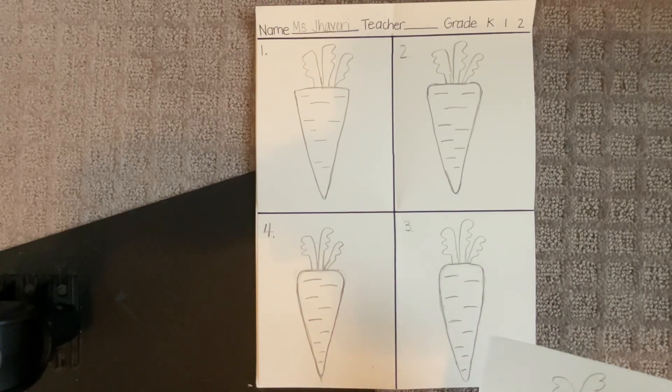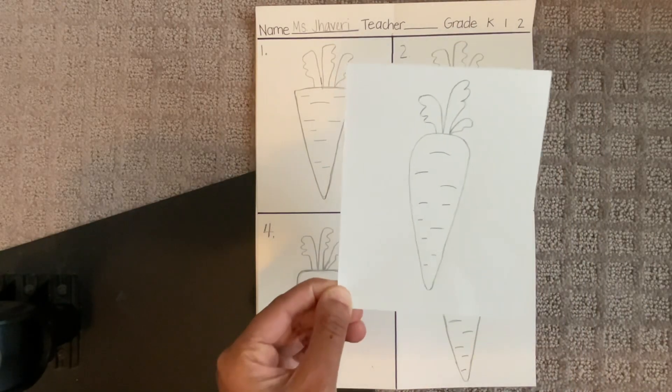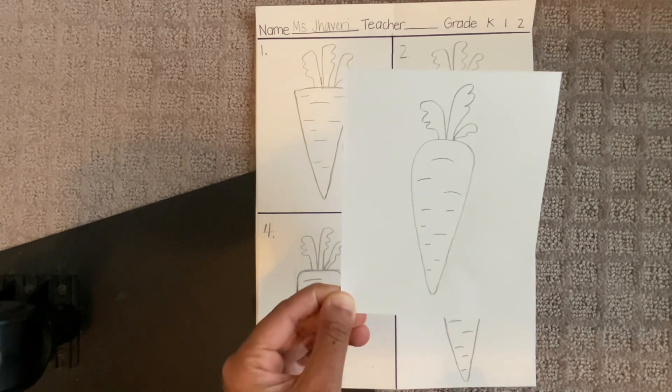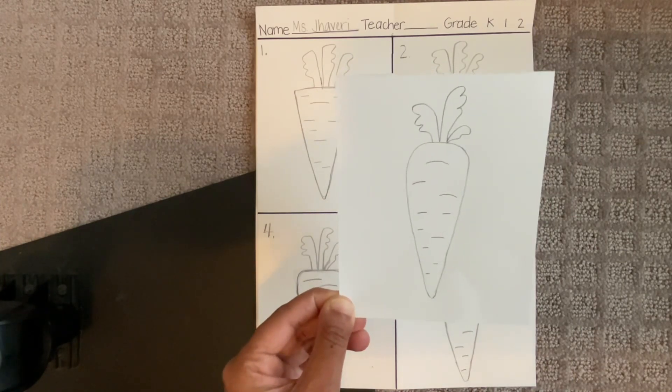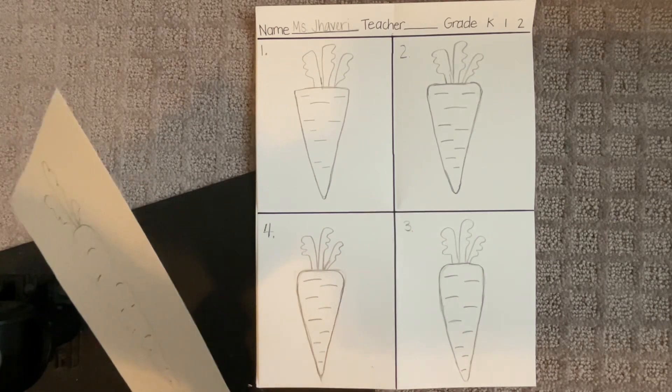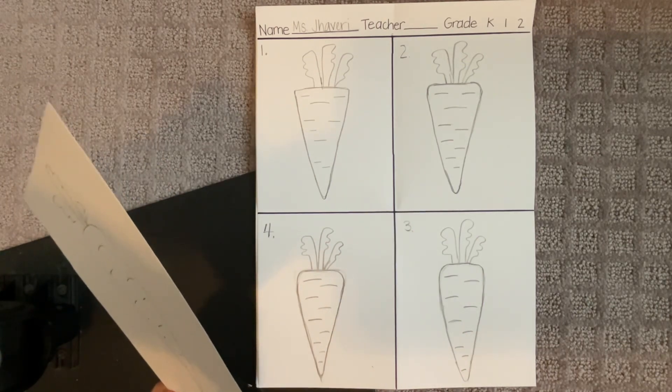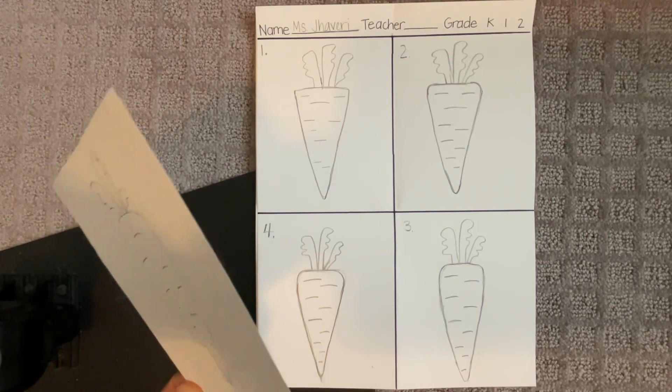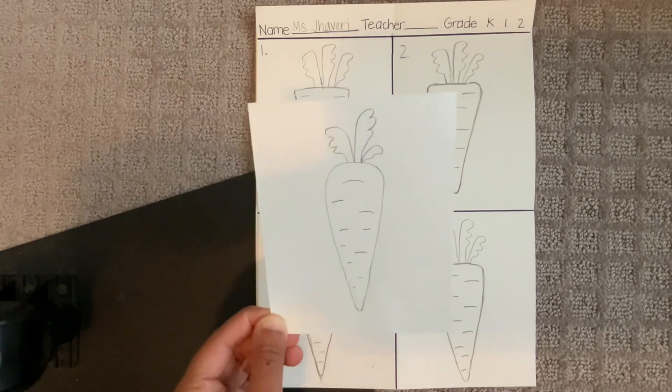Hey there! We are going to be drawing a carrot. The way we're going to do this is we're going to practice drawing it four times, because the best way to get better at drawing anything or mastering any skill is by practicing over and over again.